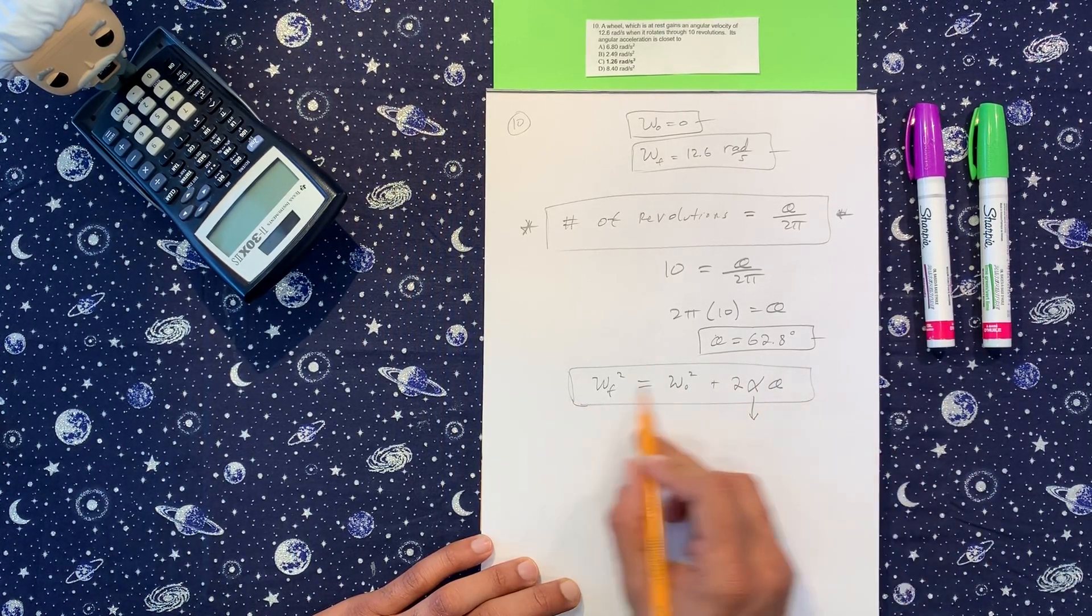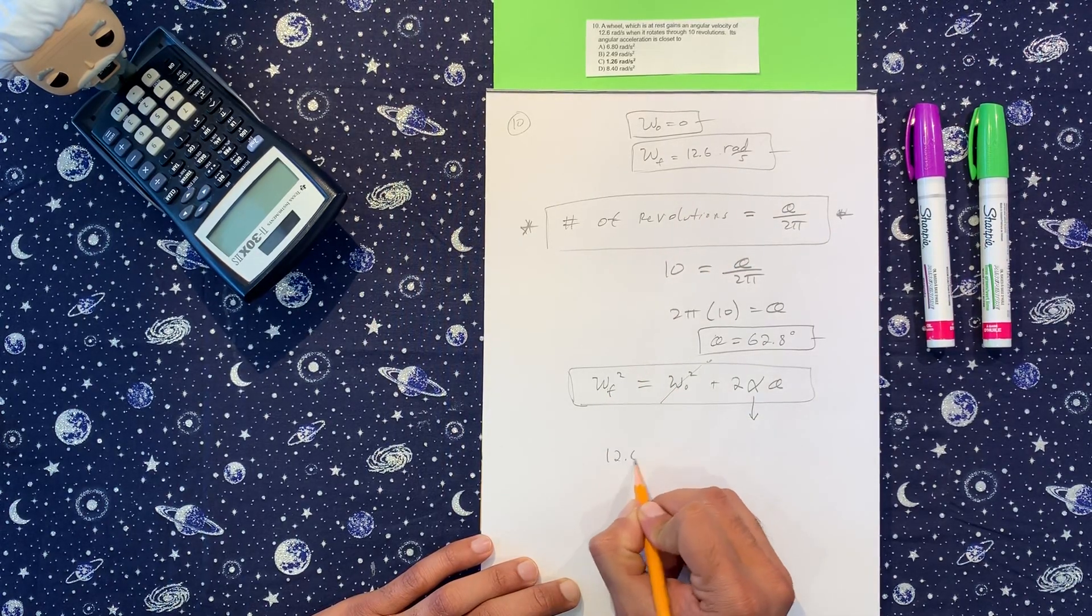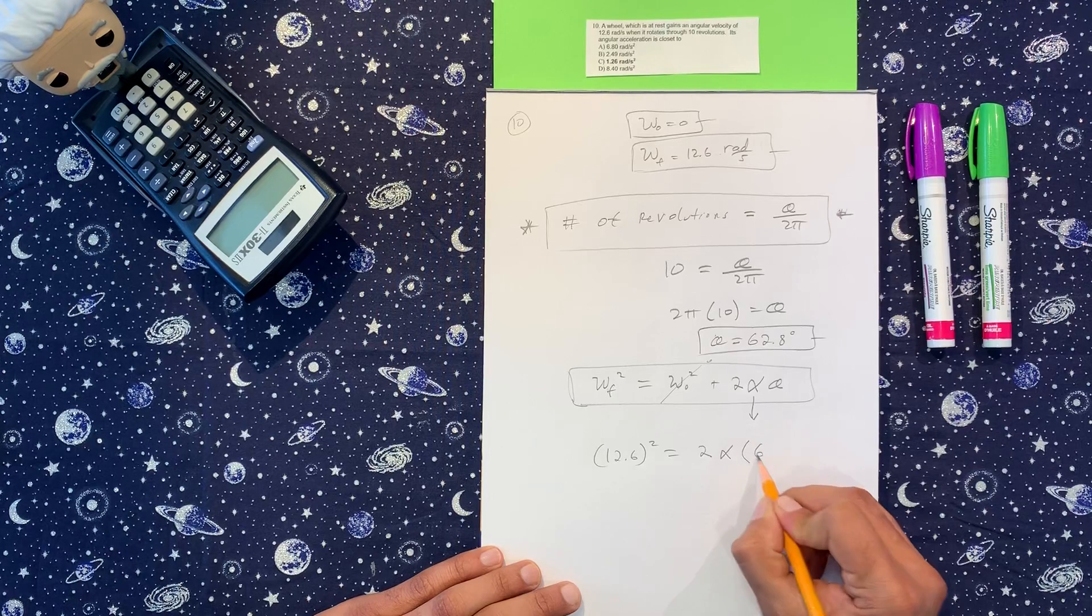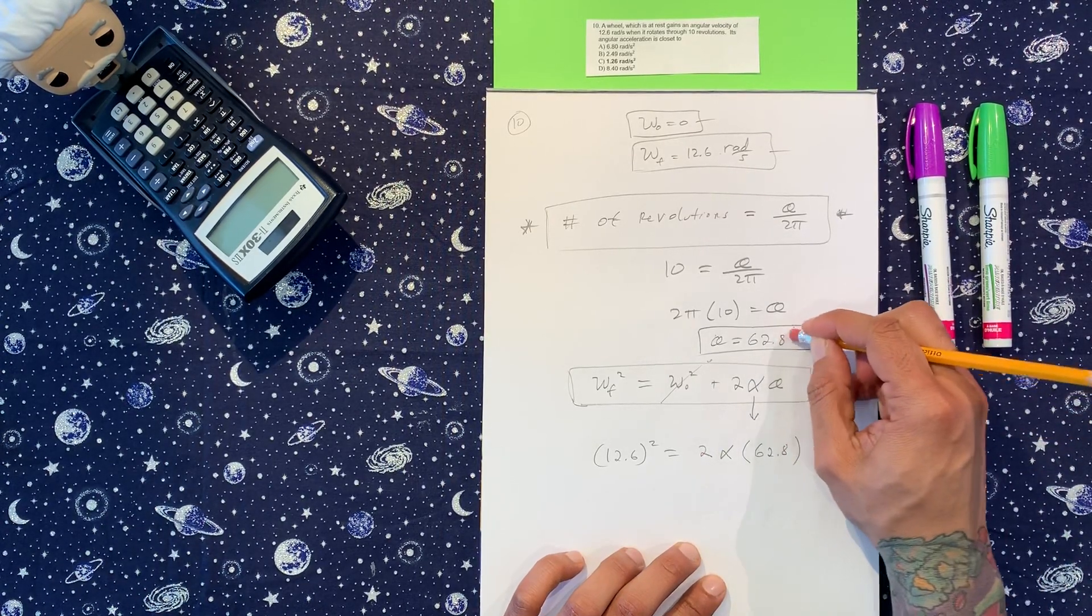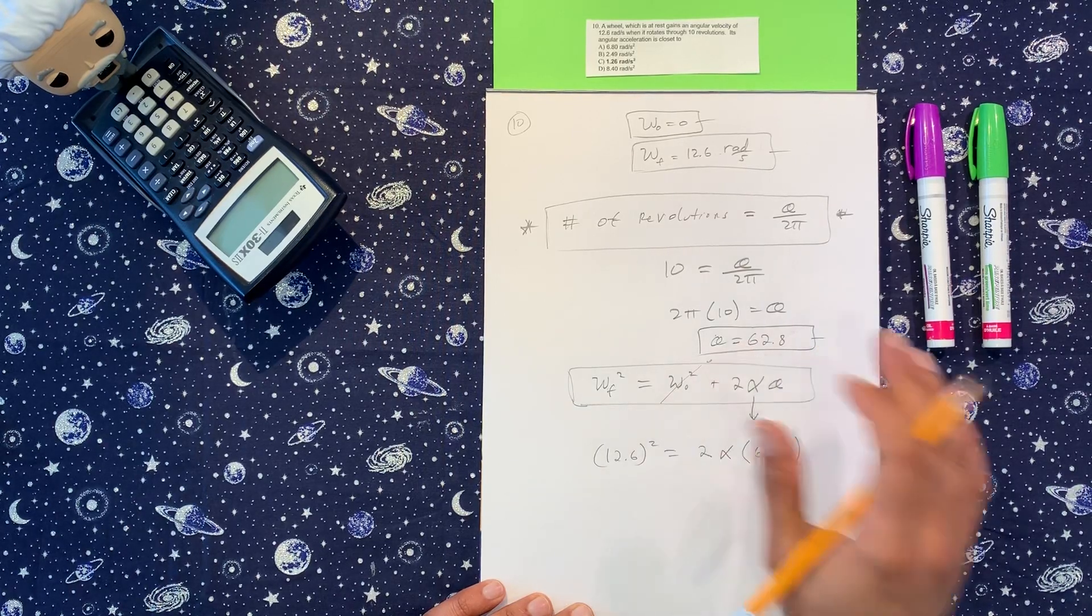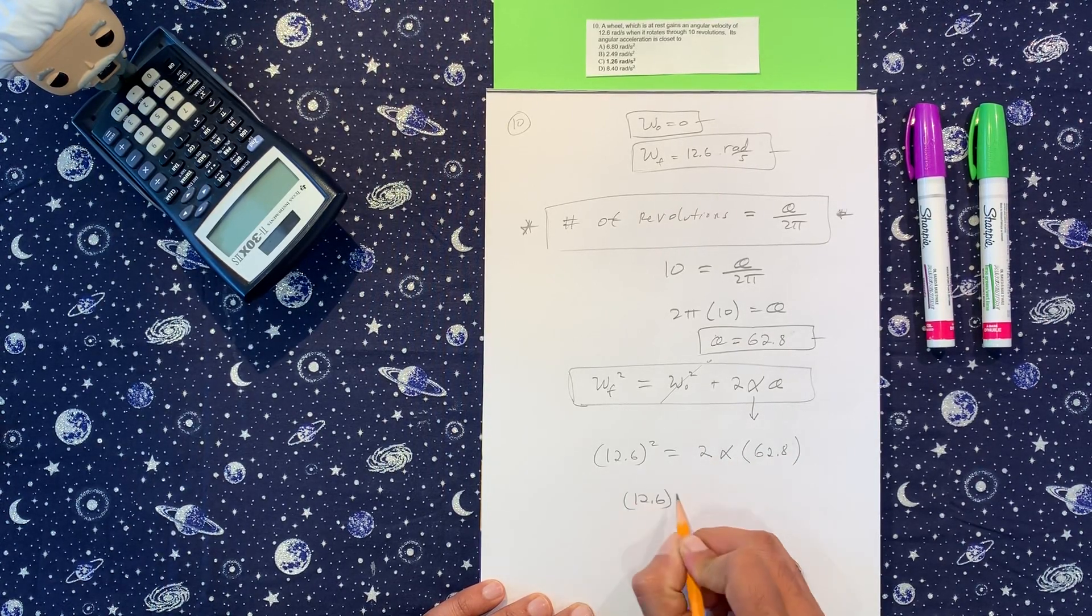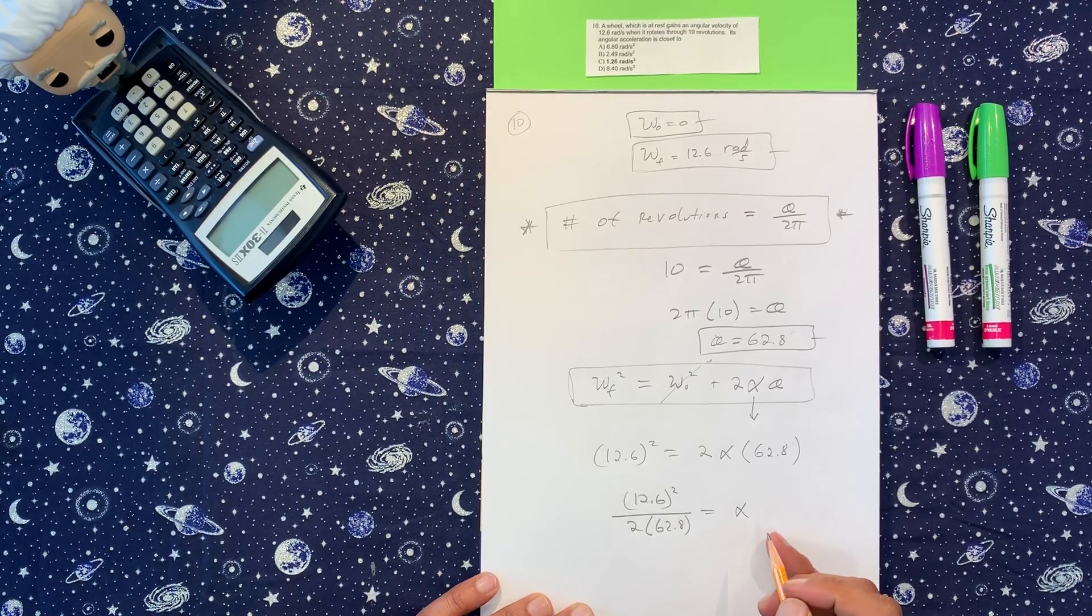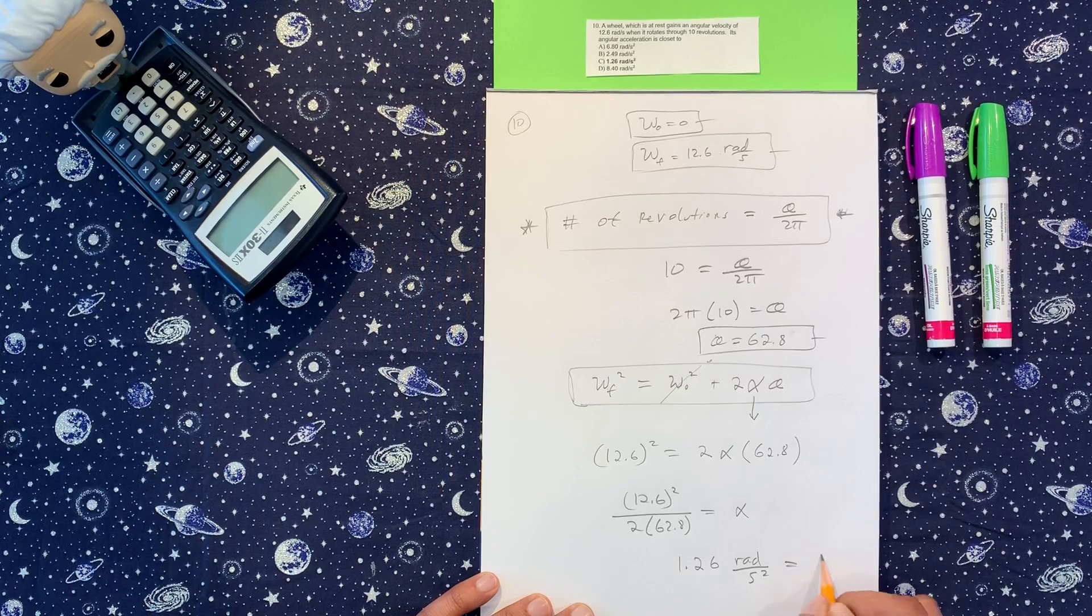So in this equation here, we got this is zero. This is 12.6, so I'm going to write 12.6 squared is equal to zero, so then we have 2 times angular acceleration times theta which is 62.8. And this is in rad, it's not degrees, so it doesn't matter for you because the units will work out. They're not going to make you convert the degrees. But 62.8, and we're going to divide these two out to this side. We got 12.6 squared over 2 times 62.8, and all that in the lovely calculator we got 1.26 rads per second squared angular acceleration.